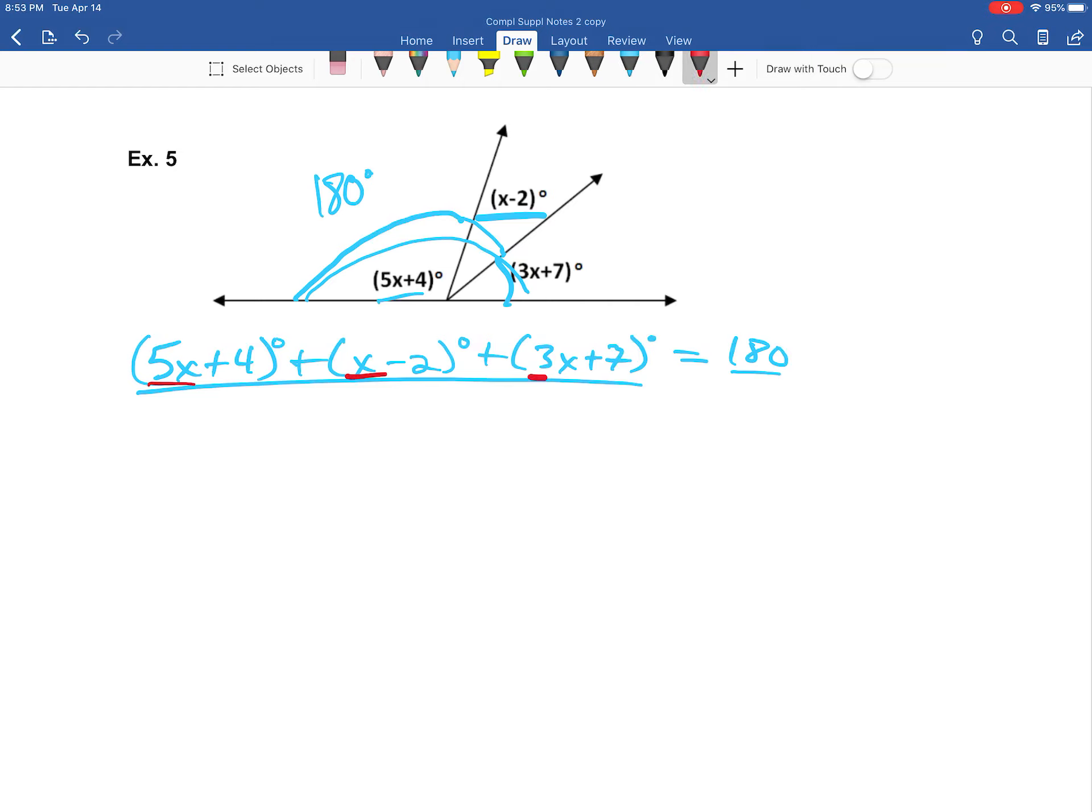Now, what we're going to go ahead and do is combine our like terms. We have 5x and another x, that gives us 6x, plus another 3x is 9x. Then we have 4 and negative 2, that combines to give us normal 2, but then plus 7. So 2 plus 7 gives us 9. Equals 180 degrees.